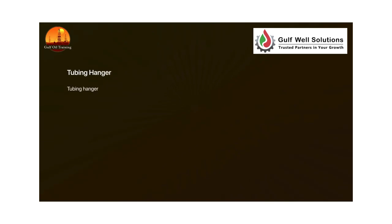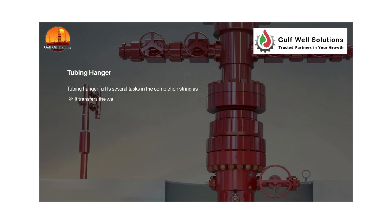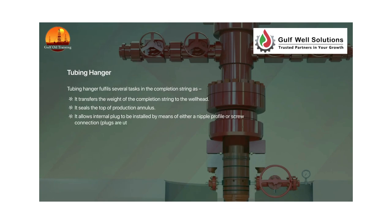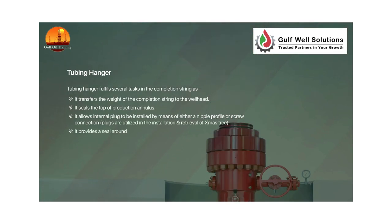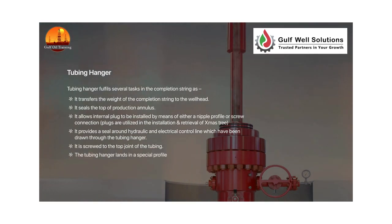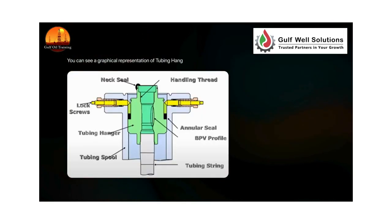The tubing hanger fulfills several tasks in the completion string. It transfers the weight of the completion string to the wellhead, seals the top of the production annulus, and allows an internal plug to be installed by means of either a nipple profile or screw connection. Plugs are utilized in the installation and retrieval of the Christmas tree. It also provides a seal around hydraulic and electrical control lines drawn through the tubing hanger, and is screwed to the top joint of the tubing, landing in a special profile inside the tubing head spool.